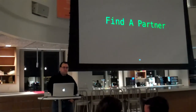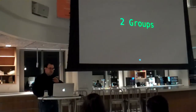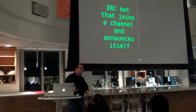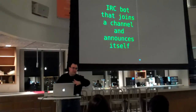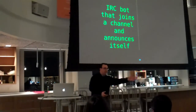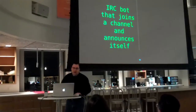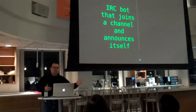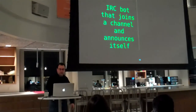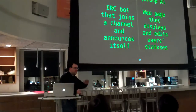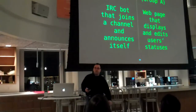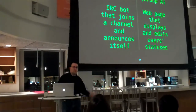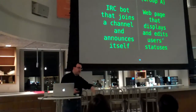Once you've found your partners, I'm going to split the partners into two groups. Group one will be on my right — and we need an even number of people — so you have to be on this side of the room. You'll be writing an IRC bot that joins a channel and announces its presence. Group A is going to make a webpage that displays and edits users' statuses. There's no authentication or anything, just you say what user you are and what your status is, and the webpage will display it.